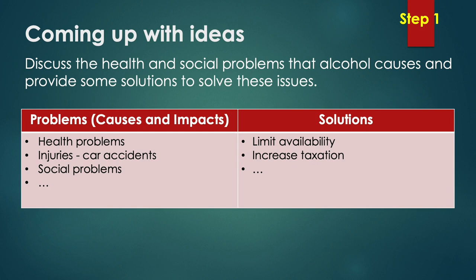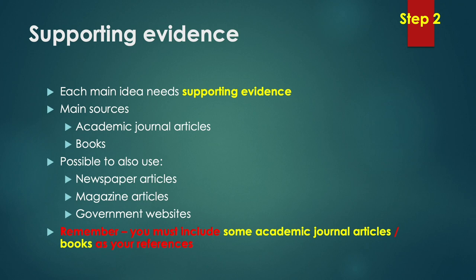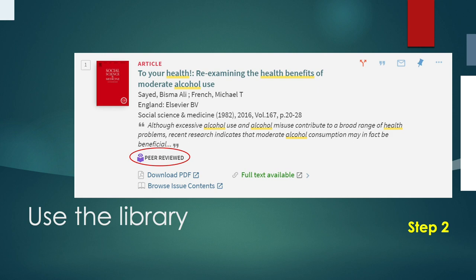Have many points — more than you need. That's step one. Step two: you now need to find supporting evidence for your points. Each main idea needs supporting evidence. Your main sources should come from academic journal articles and books. You can also use newspaper articles, magazine articles, and government websites. But remember, your essay must include some academic journal articles or books as your references — you cannot only use newspaper articles. I went online to the PolyU library and used OneSearch and found an article about the health benefits of moderate alcohol use.